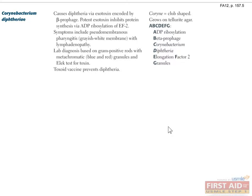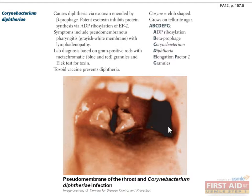Now we will switch gears and talk about our gram positive rods. Corynebacterium diphtheriae is easy because it only causes one disease: diphtheria. Diphtheria used to be quite common, an upper respiratory infection characterized by fever, sore throat, lymphadenopathy, and an inherent gray-white pseudomembranous film covering the pharynx, tonsils, and/or nasal cavity. The fact that diphtheria produces an exotoxin that inhibits protein synthesis via ADP ribosylation of elongation factor 2 is commonly tested on Step 1, and a mnemonic can help you remember that.